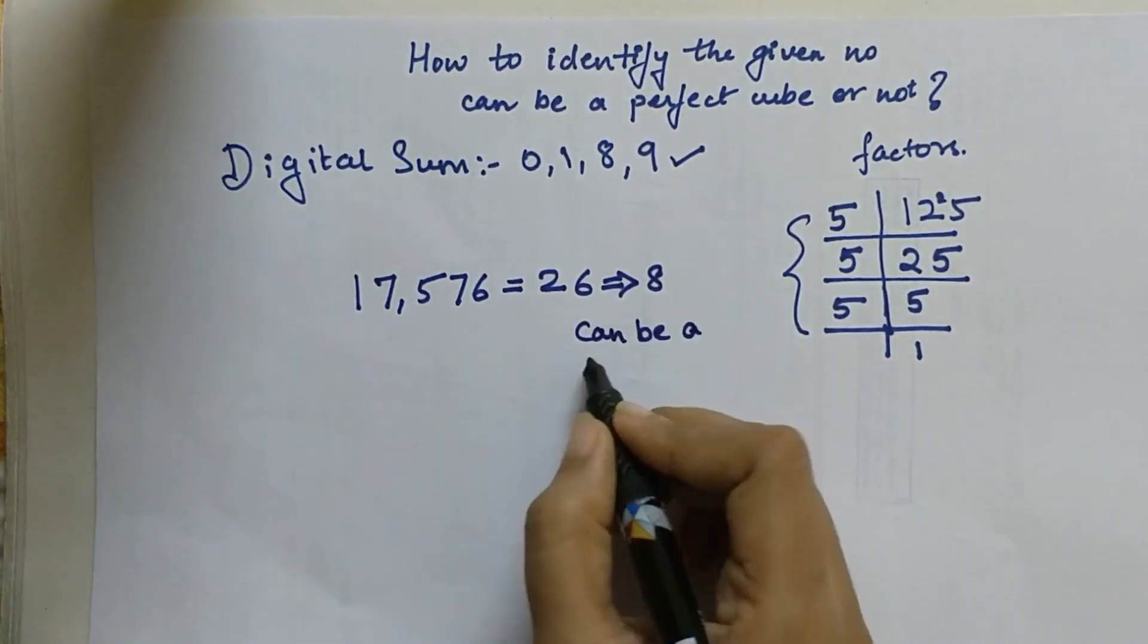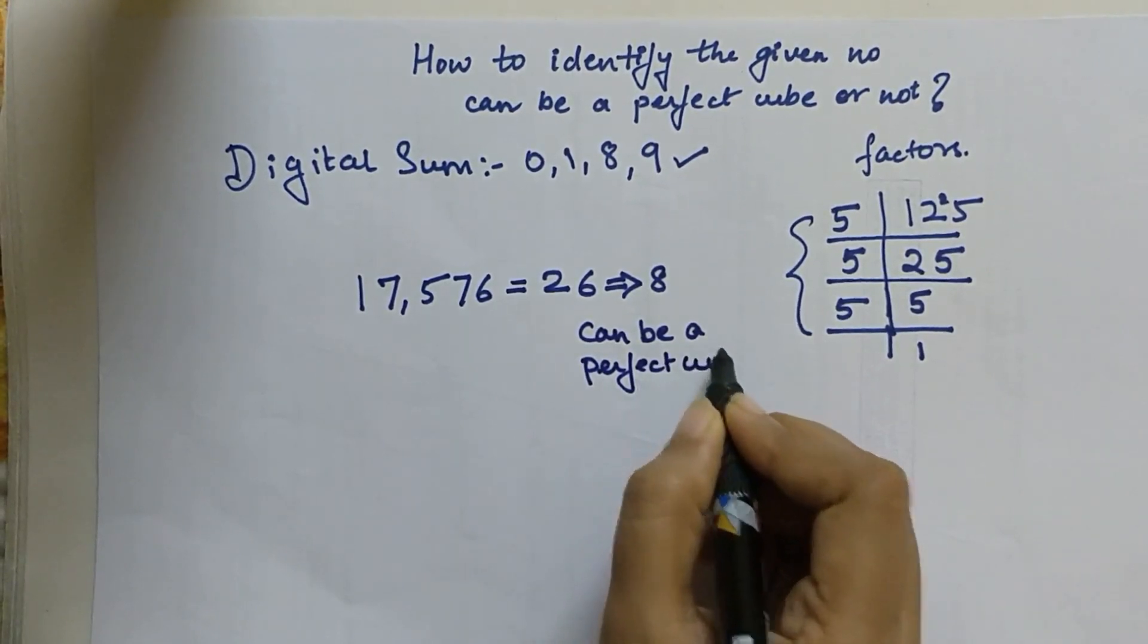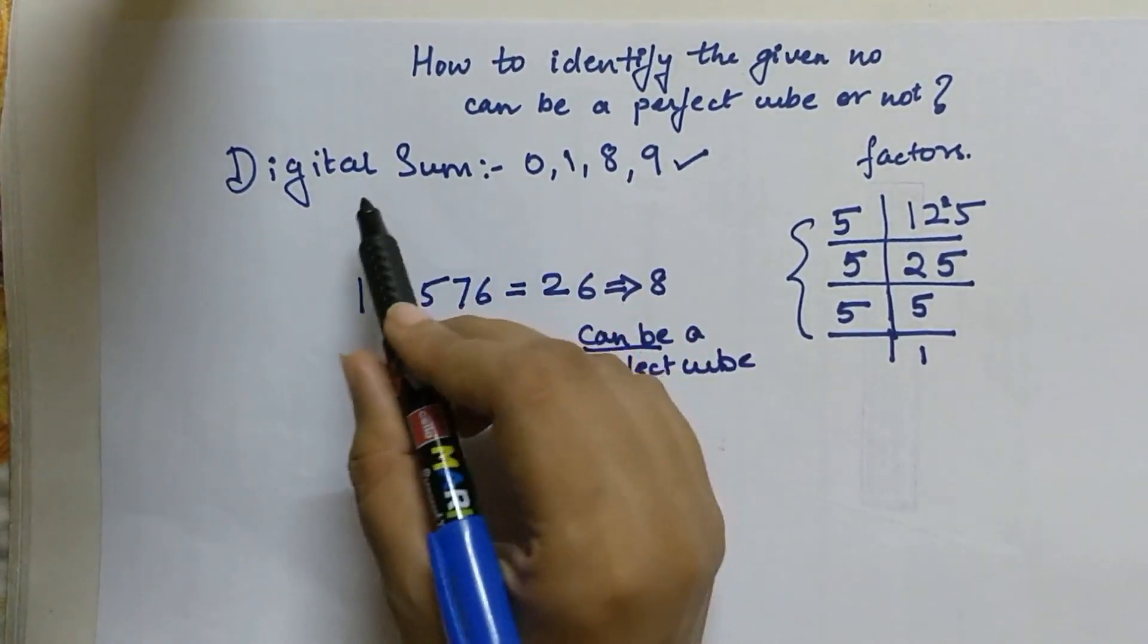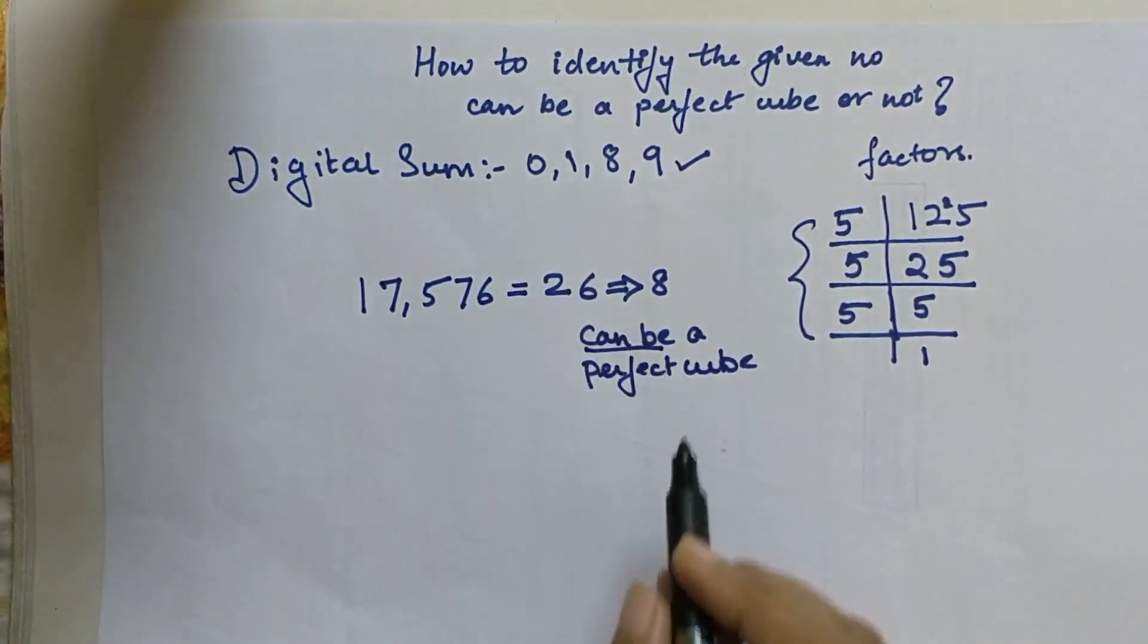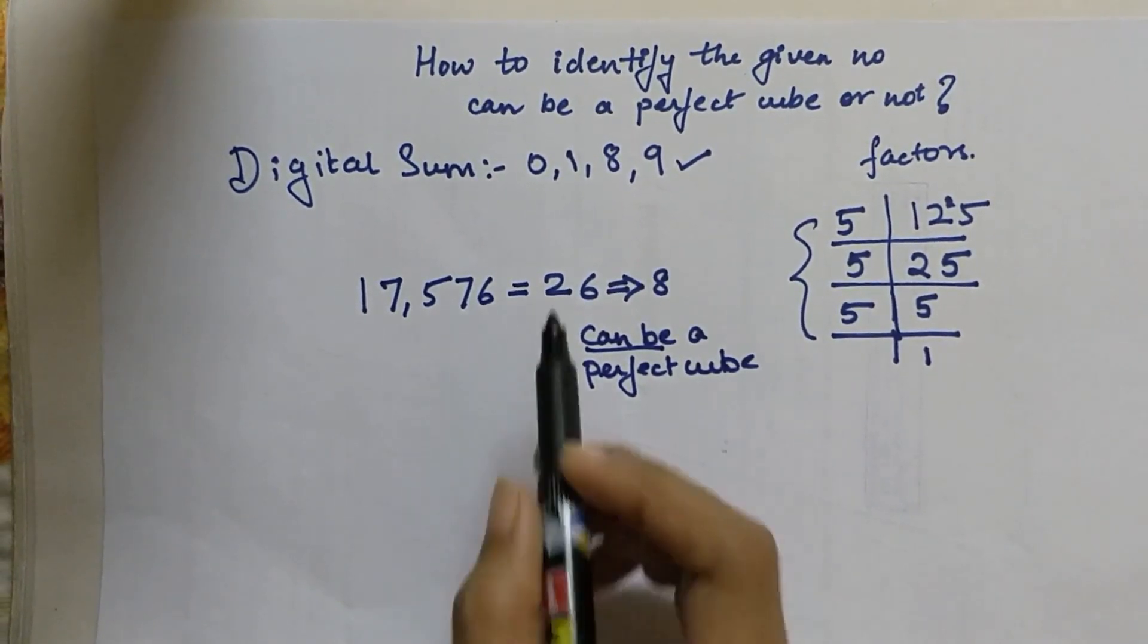So now students I can say that the given number can be a perfect cube. Students, I want you all to please pay attention to the term 'can be'.